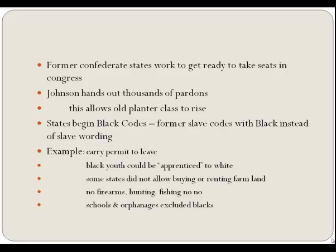During the summer of 1865, the white residents of the Southern states worked hard to abide by President Johnson's program so they could be ready to take seats in Congress when it opened in December. Surprisingly, Johnson handed out thousands of pardons in an almost routine fashion, enabling the old planter class to reemerge. Many Confederate leaders were elected at the state level. In a rush to reenter the Union, some state conventions politely refused to even put the word 'secession' in their constitutions and didn't want to reject the Confederate debt—they wanted the federal government to take it over.